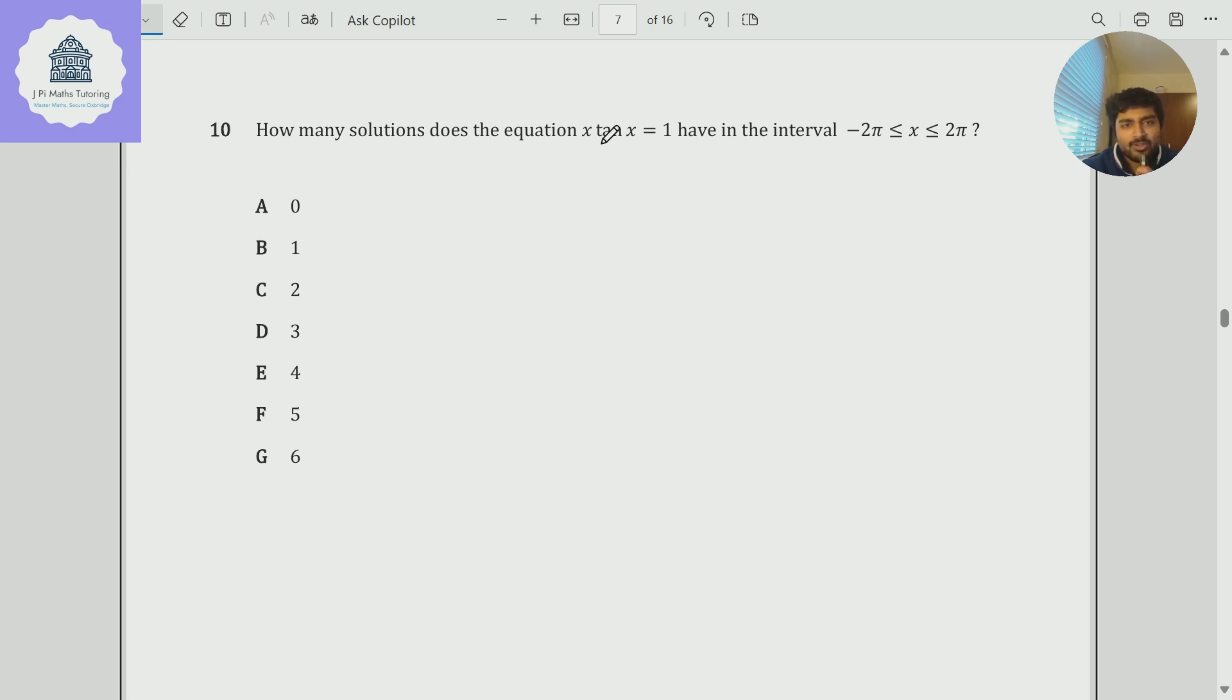What I'm going to first notice is that x equals 0 is definitely not a solution to this equation, because 0 times 0 is not 1. And so therefore, I can just divide by x, and I'm going to get that tan x is 1 over x.